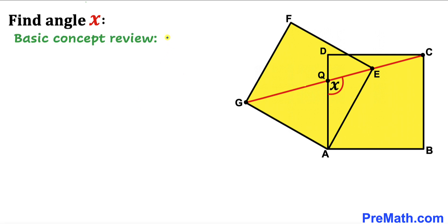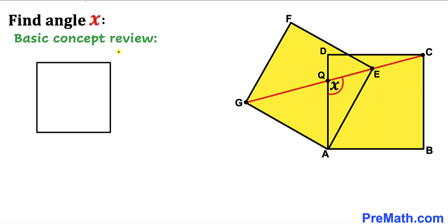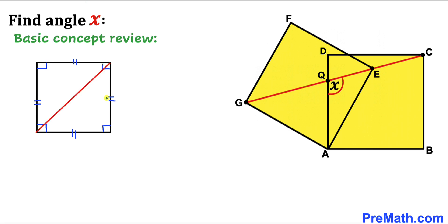Before we proceed any further, let me go over the basic concepts we are going to use in solving this problem. Here's our square — we know that all side lengths of a square are equal in length, moreover all angles are 90 degrees each, and this is the diagonal of the square.